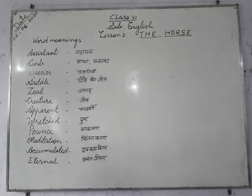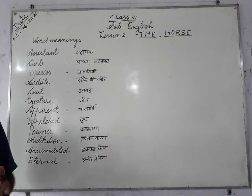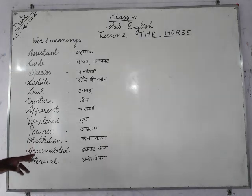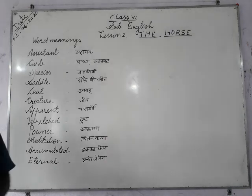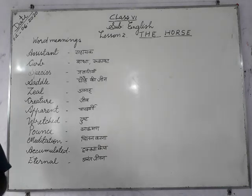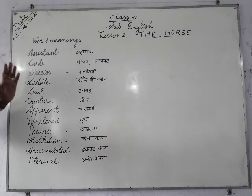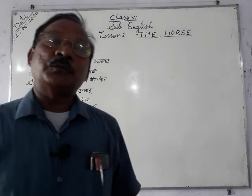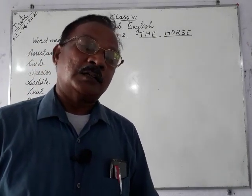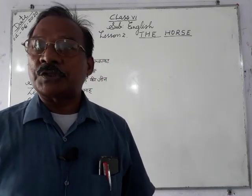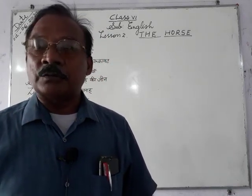Meditation — chintan karna, kisi ke baare mein kafi gehrai se sochna; that is called meditate, and the noun form is meditation. Accumulated — means ikattha kiya. Eternal — ananta jeevan; eternal means ananta jeevan. Please learn the spelling and meaning of all words in this chapter. You can enjoy reading this very good story written by Rabindranath Tagore. Thank you very much.